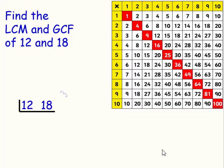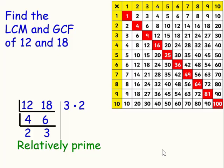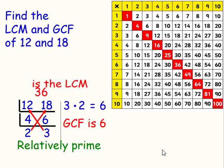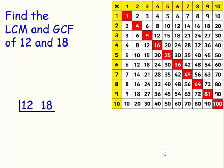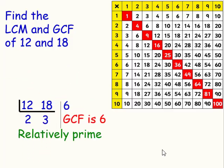And then we said, instead of doing two first, we could have did three, but then we would have to do two as well, to find the LCM. Or we could have said, a lot faster would have been to just do six. Well, this is going to help us with the next thing on our agenda, and that's called factoring.